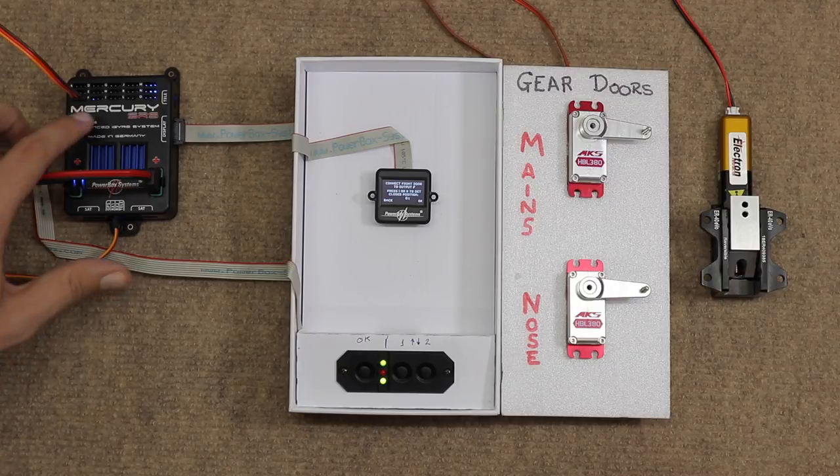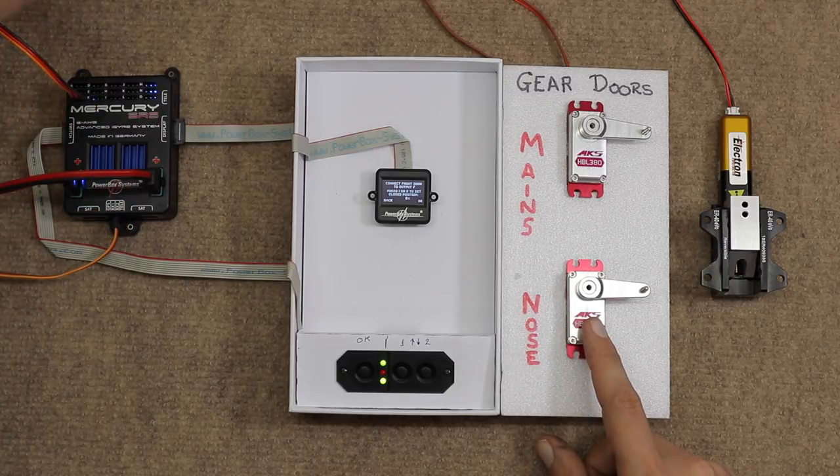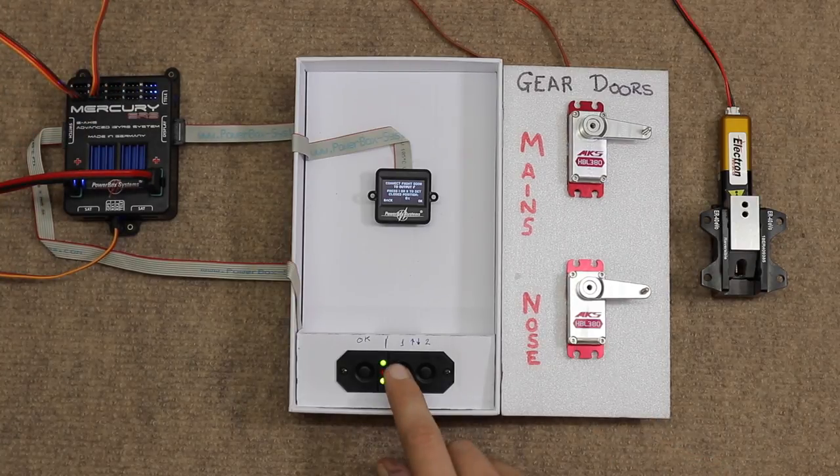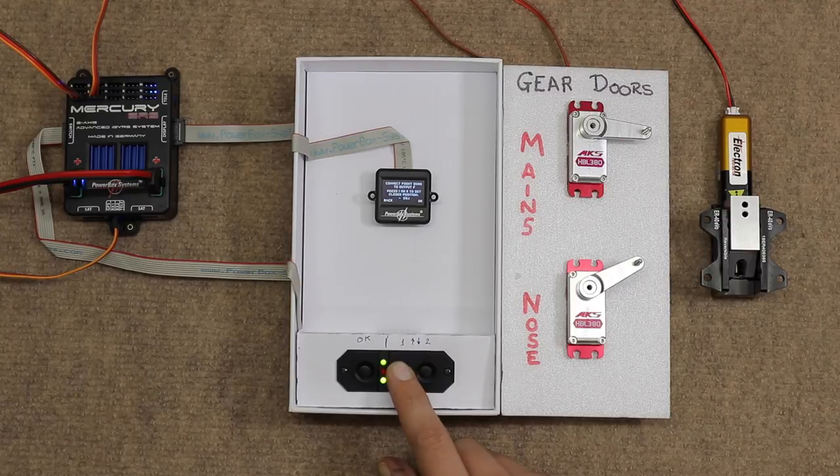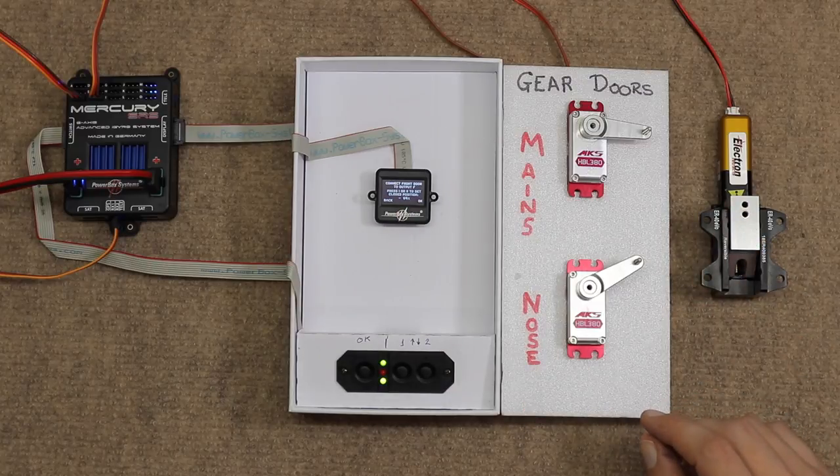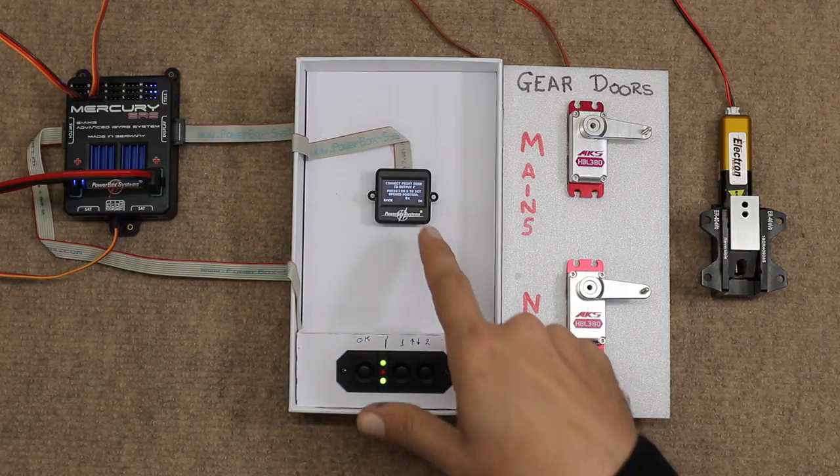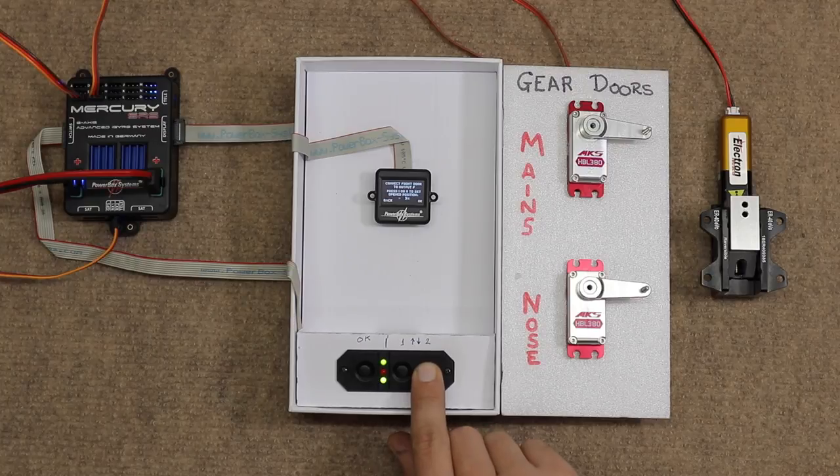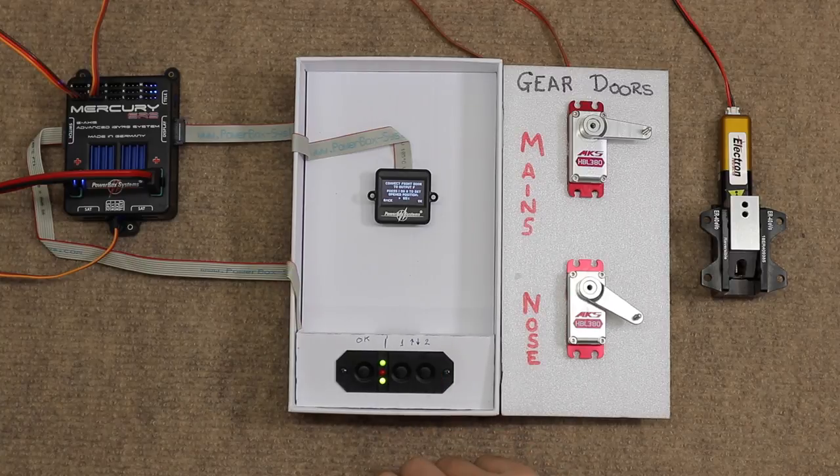OK. Connect front door to output F. So front door, that's my main, so I'm going to use this servo. And I'm going to connect that to F. And I'm going to simply move that to what I'm going to call my closed position. OK. Numeric percentage value, whatever it needs. Done. OK. For the open position, which is going to be the other way. Just going to move it again to whatever position I need for the open position. There we go.